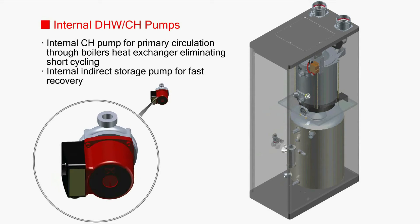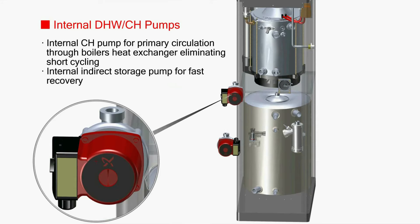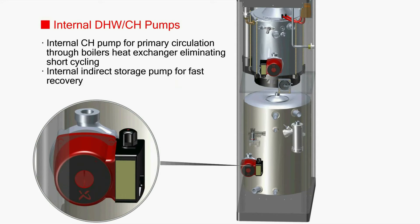A recirculation pump circulates heated water to the heating pipe during heating. When using hot water, it transfers the water to the hot water supply heat exchanger.